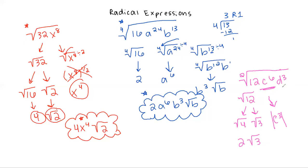Taking the square root of d cubed is similar to the last example — 2 can go into 3 once, but we would still have a d left under the square root. So the final answer would be 2, the absolute value of c cubed, and d outside the root, then the square root of 3d under the root.